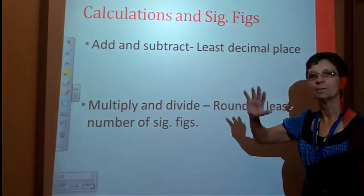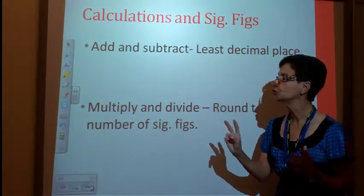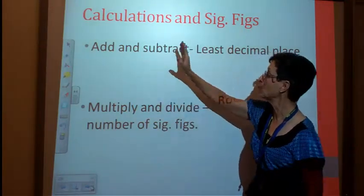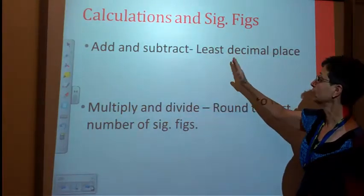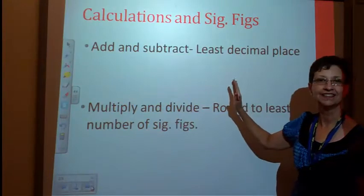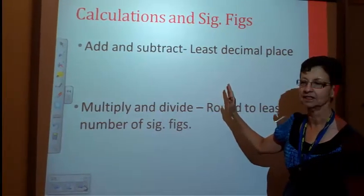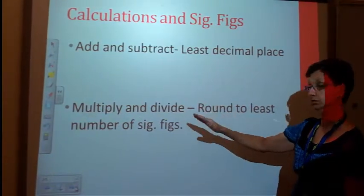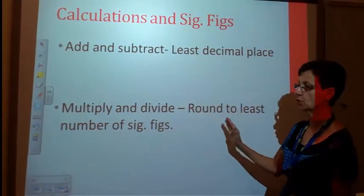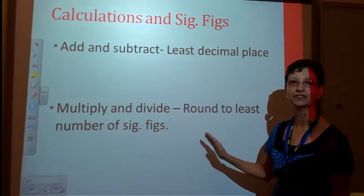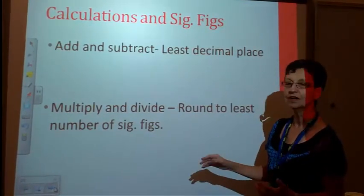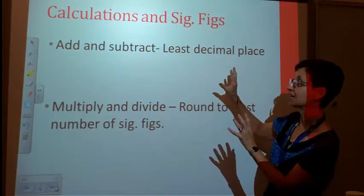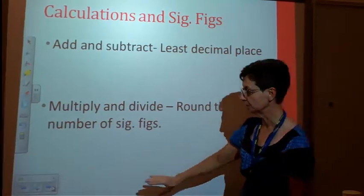There are basically two rules. Very simple, two rules of significant figures. When you add or subtract, you are going to round to the least number of decimal places. When you multiply and divide, you're going to round to the least number of significant figures. So, let's do some practice. Keep in mind, add or subtract least number of decimal places.